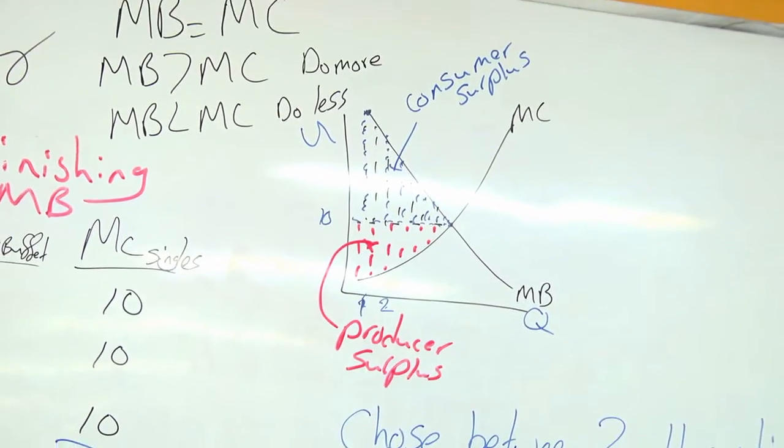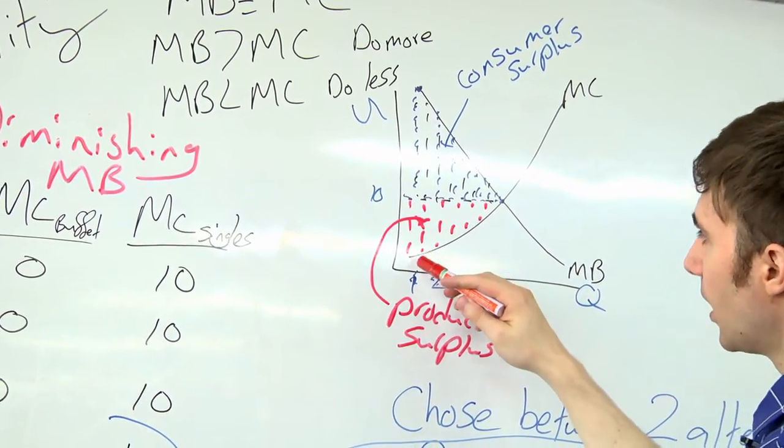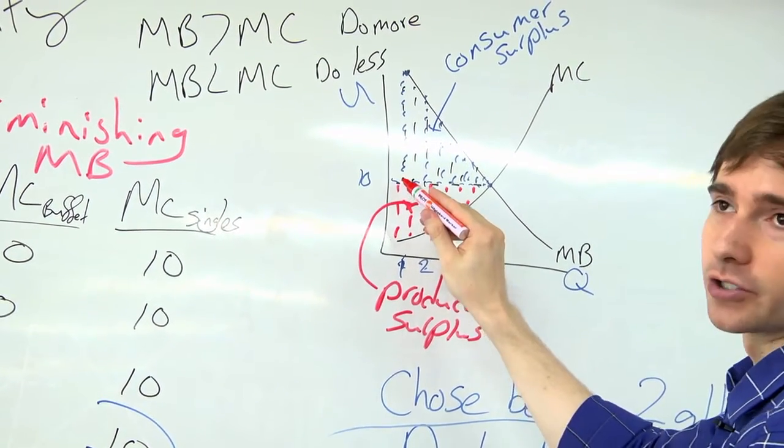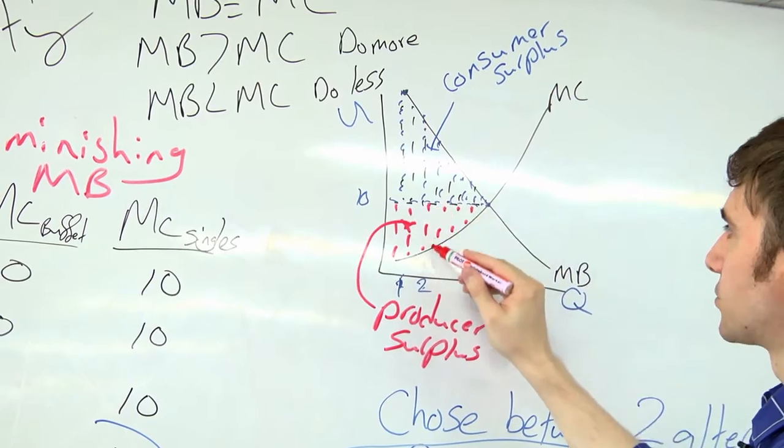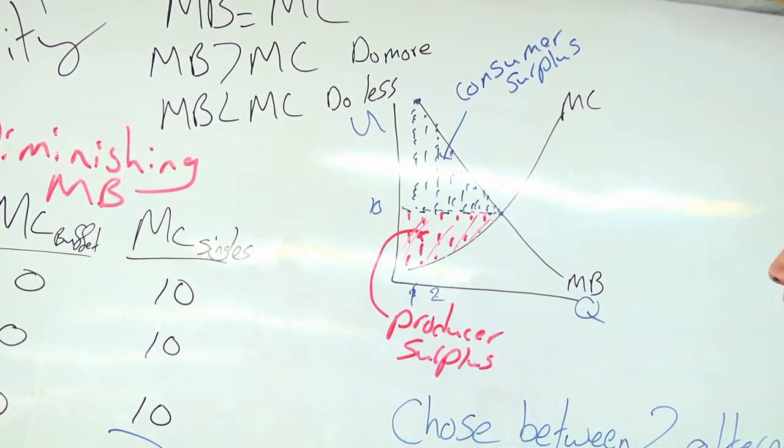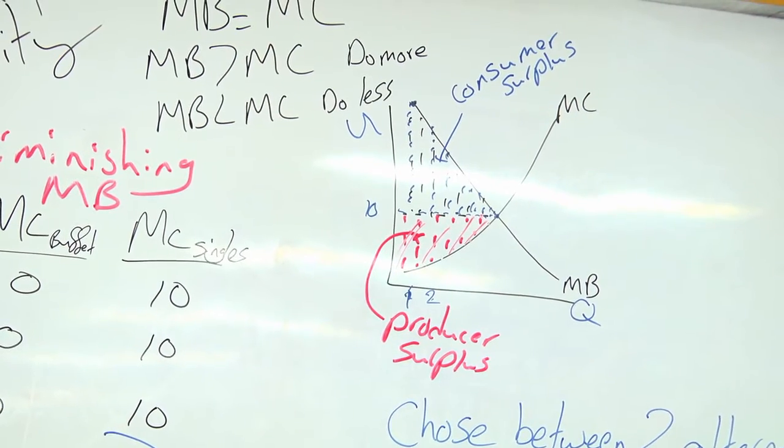The producer also has a surplus. They would have been willing to sell at a lower price, but were able to charge a higher price, and so on. And so the red triangle is my producer surplus.